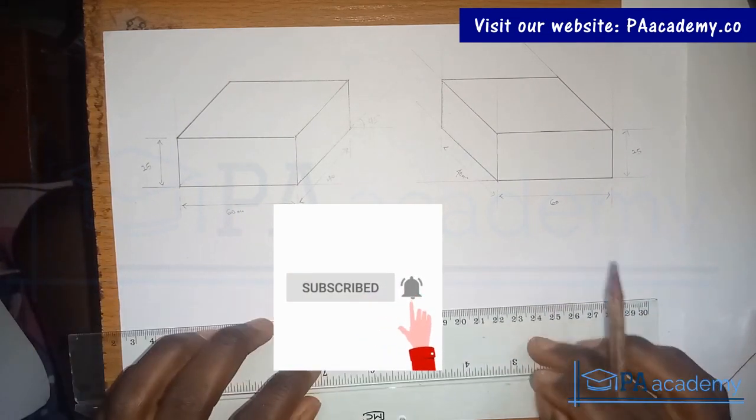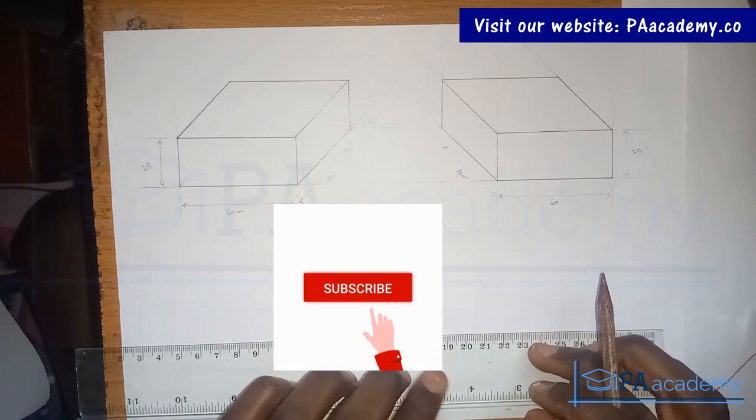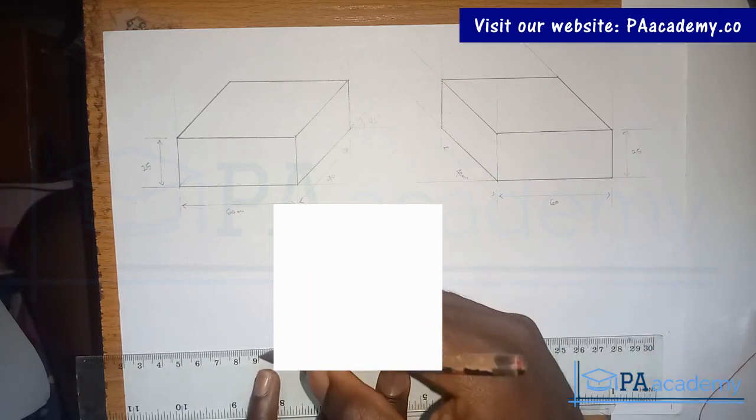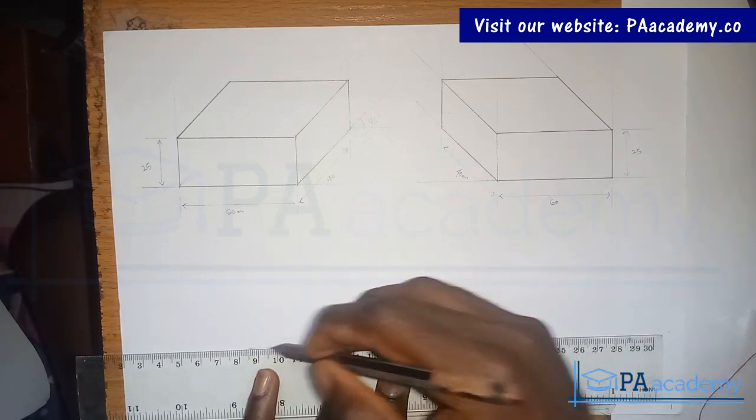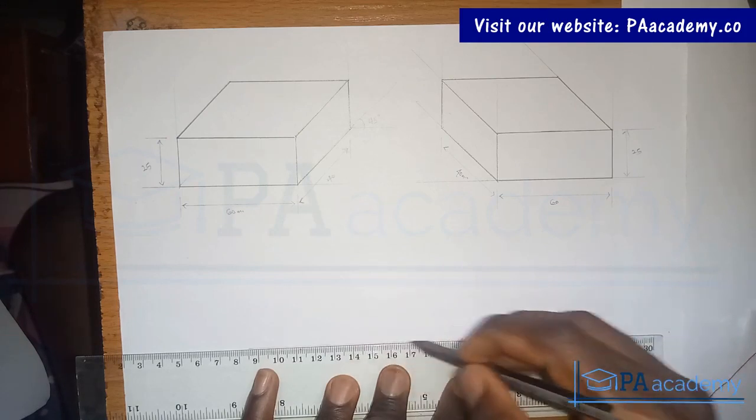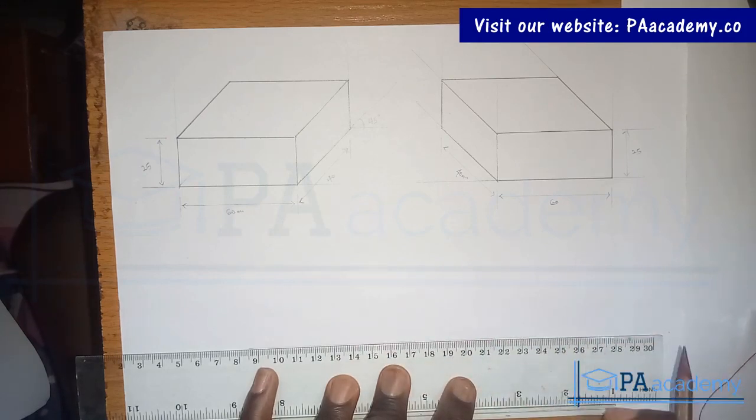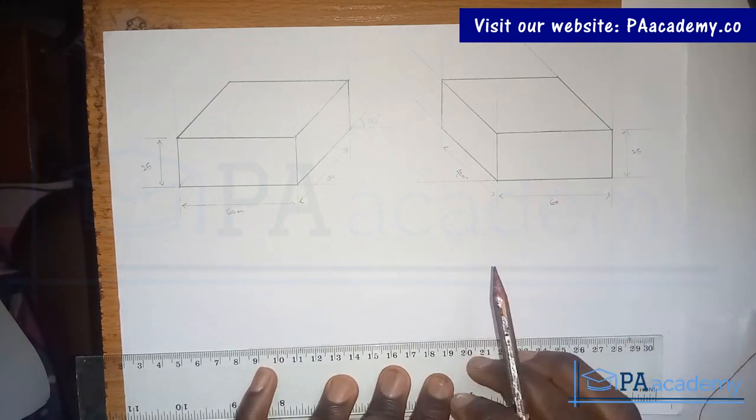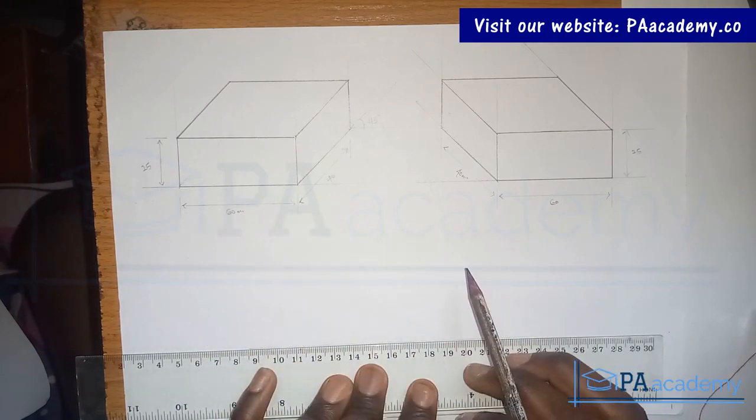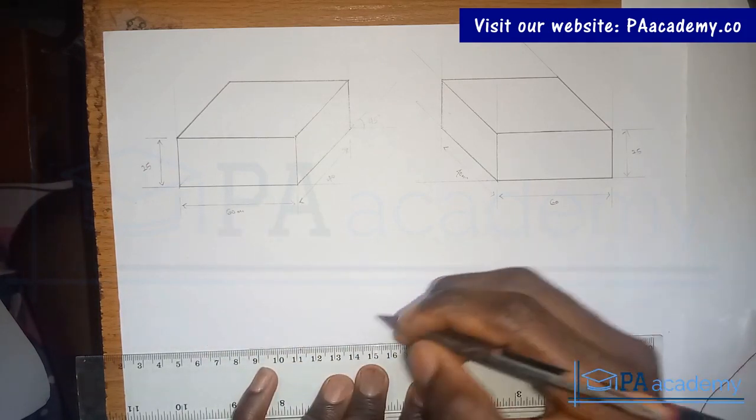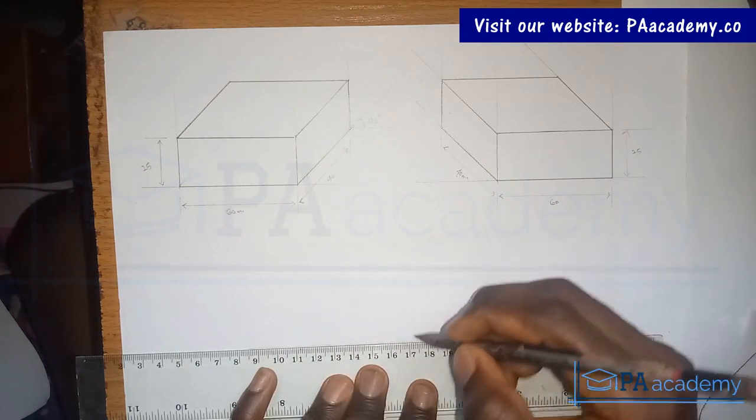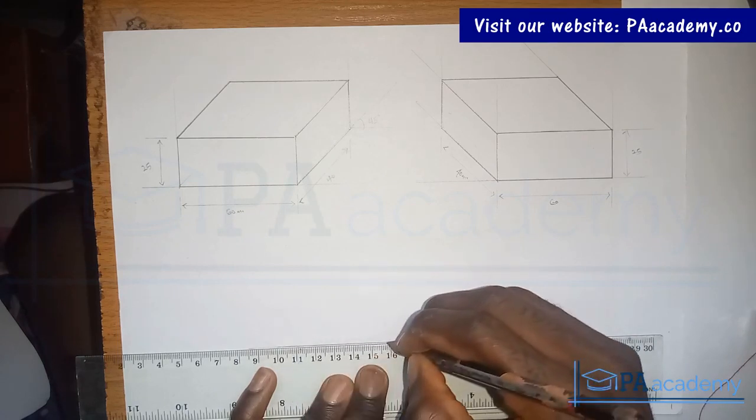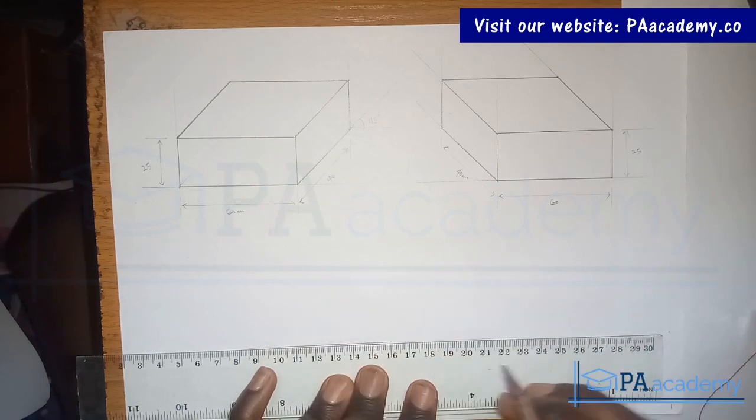So let me start with drawing my straight line. I've set my ruler. So let me pick this. So you can also attempt this on your own. So you can see this is from here to here is 60 millimeter, that is 6 cm.